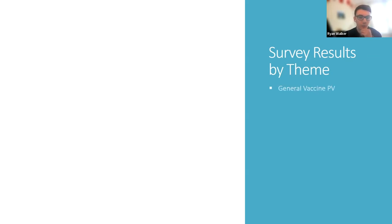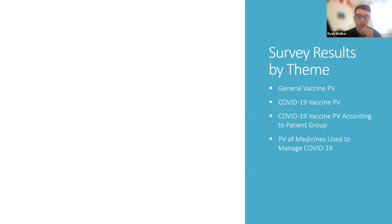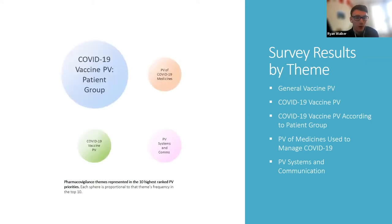The five themes were: general vaccine pharmacovigilance; COVID-19 vaccine pharmacovigilance; vaccine pharmacovigilance according to patient group; pharmacovigilance of medicines used to manage COVID-19; and pharmacovigilance systems and communication during the pandemic. We'll be presenting a top 10 of these overall priorities. The size of the spheres is representative of the frequency of these themes in our top 10 priorities.